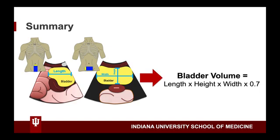In summary, to calculate bladder volume, we are going to obtain three measurements of the bladder: the length in the sagittal view, and the height and width in the transverse view. We will round all those measurements to the nearest centimeter. Finally, we will multiply those numbers by our correction factor of 0.7 to obtain our bladder volume measurement in cubic centimeters.